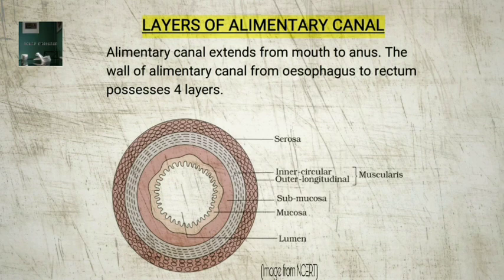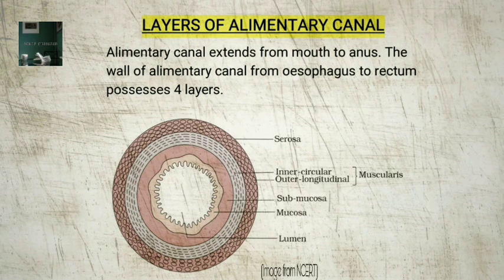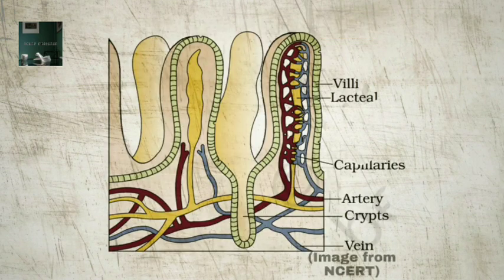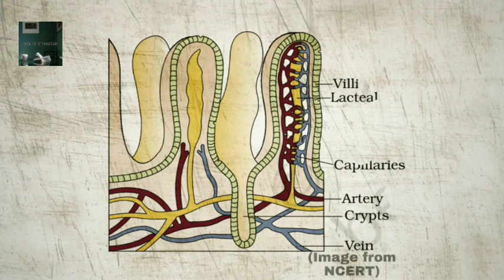Glands are also present in the submucosa. 4. Mucosa — the innermost layer lining the lumen of the alimentary canal. This layer forms irregular folds called rugae in the stomach and small finger-like foldings called villi in the small intestine. The mucosal epithelium has goblet cells which secrete mucus that help in lubrication. Mucosa also forms glands in the stomach and crypts in between the bases of villi in the intestine. The cells lining the villi produce numerous microvilli, giving a brush border appearance, enormously increasing the surface area. Villi are supplied with a network of capillaries and a large lymph vessel called the lacteal. The mucosal layer forms crypts of Lieberkühn in between the bases of villi in the intestine.